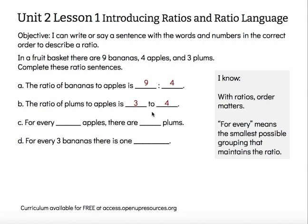Letter C: for every blank apples, there are blank plums. I'll insert the numbers as given — for every four apples, there are three plums. Now I need to think: can I group these smaller and still represent the same ratio? If I cut both numbers in half, I'd have two apples and one and a half plums. Although that ratio is still true, we like to keep whole numbers when possible, so four to three is actually the smallest grouping. For every four apples, there are three plums.